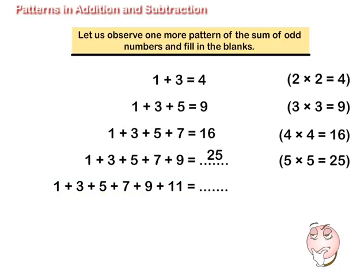1 plus 3 plus 5 plus 7 plus 9 plus 11 is equal to 6 multiplied by 6, which is equal to 36.